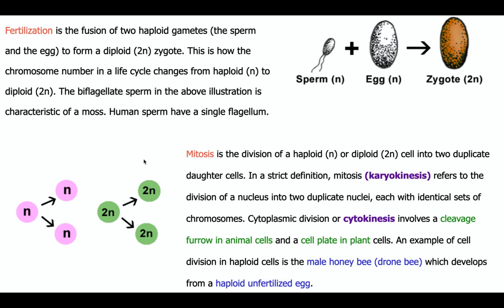Mitosis generally has two parts: karyokinesis, meaning division of the nucleus, and cytokinesis. After karyokinesis, animal cells form a cleavage furrow almost at the middle of the cell, producing two new cells from the parent cell. For plant cells, a cell plate forms almost at the middle, dividing the parent cell into two. Mitosis usually occurs in diploid cells, but there are exceptions — for example, male honeybee drone bees develop from haploid unfertilized eggs through mitosis of haploid cells.